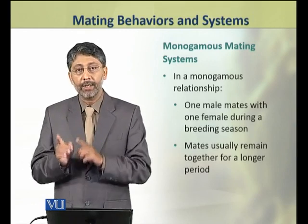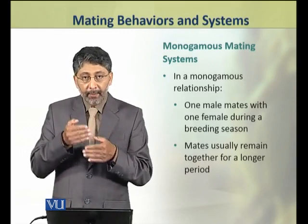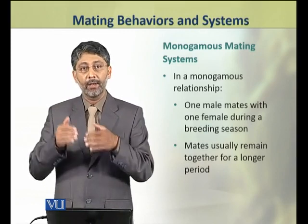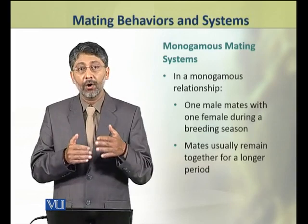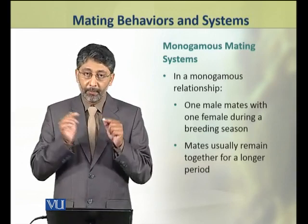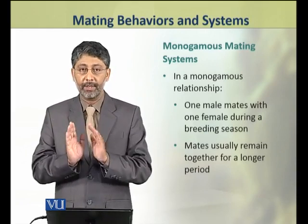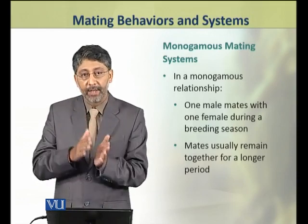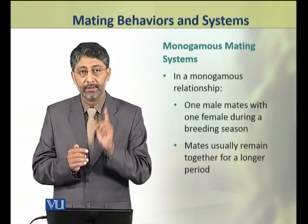یعنی یہ ایک ایسا pattern ہے جس میں ایک male اور ایک female ایک سیزن کے لیے at least pair بنا لیتے ہیں اور یہی pair آپس میں mating کرتا ہے. Mates عام طور پر longer periods کے لیے اکٹھے بھی رہتے ہیں — صرف mating کے لیے اکٹھے نہیں ہوتے، otherwise بھی یہ اکٹھے رہتے ہیں in a monogamous mating system.